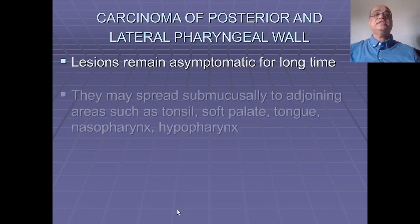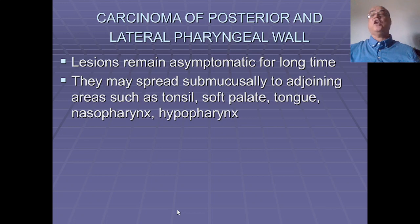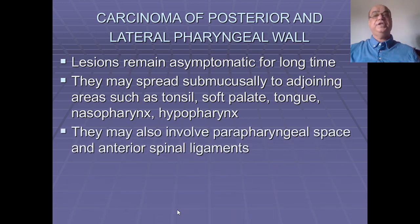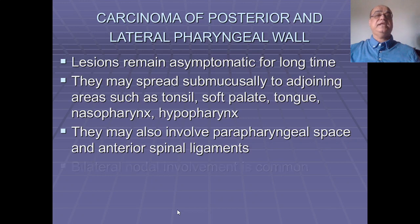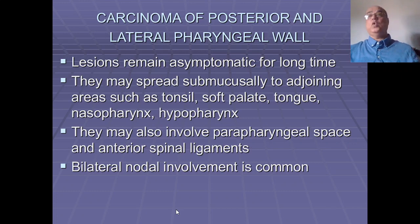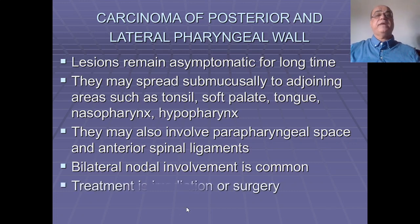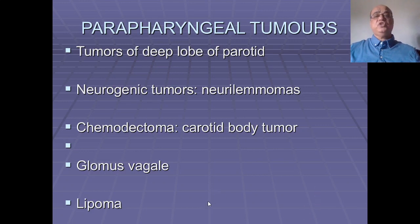Carcinoma of the posterior and lateral pharyngeal wall: lesions remain asymptomatic for a long time and may spread submucosally to adjoining areas such as tonsils, soft palate, tongue, nasopharynx, and hypopharynx. They may also involve the parapharyngeal space and anterior spinal ligaments. Bilateral lymph node involvement is common because the posterior pharyngeal wall is a midline structure, similar to the base of tongue. Treatment is again irradiation or surgery.